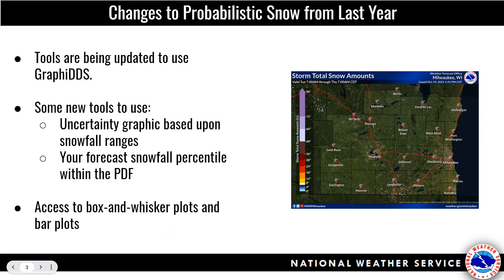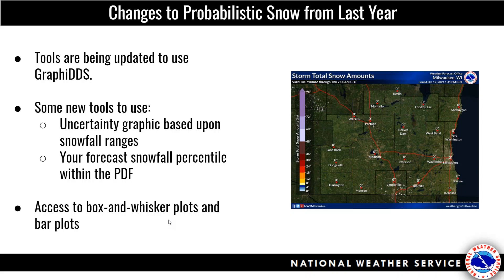We also have a tool where you can look at your forecast snowfall and see where it sits within the CDF — what percentile your snowfall forecast is at compared to the ensemble — and it can help inform you whether you want to change that forecast. Are you up near the 90th percentile or closer to the 10th percentile in different parts of your CWA? Finally, everyone will now have access to the box-and-whisker plots and bar plots, assuming you opt into the entire survey. Discussions about what that means for your office and operations are ongoing.